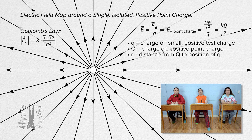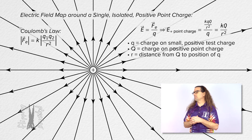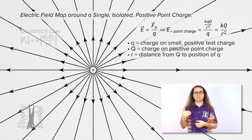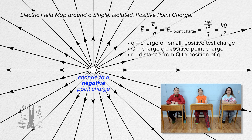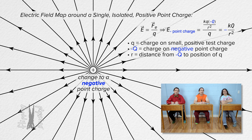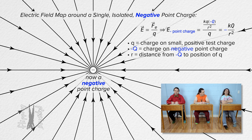That equation matches the diagram Bobby drew. And what does the electric field around a negative point charge look like? It ends up being the same equation, only capital Q, the charge of the point charge, is negative. That means all the field lines go toward the negative point charge — it's almost the same as for the positive point charge, only all the arrows point radially inward toward the negative point charge, because the law of charges says the positive test charge will be attracted to the negative point charge, because the two have opposite charge signs.